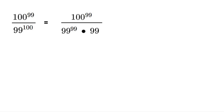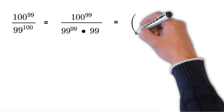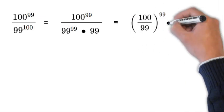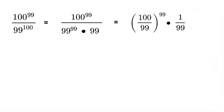So now that we have 100 to the power of 99 over 99 to the power of 99 times 99, we can rewrite this again so that we have 100 to the power of 99 over 99 to the power of 99 multiplied by 1 over 99.